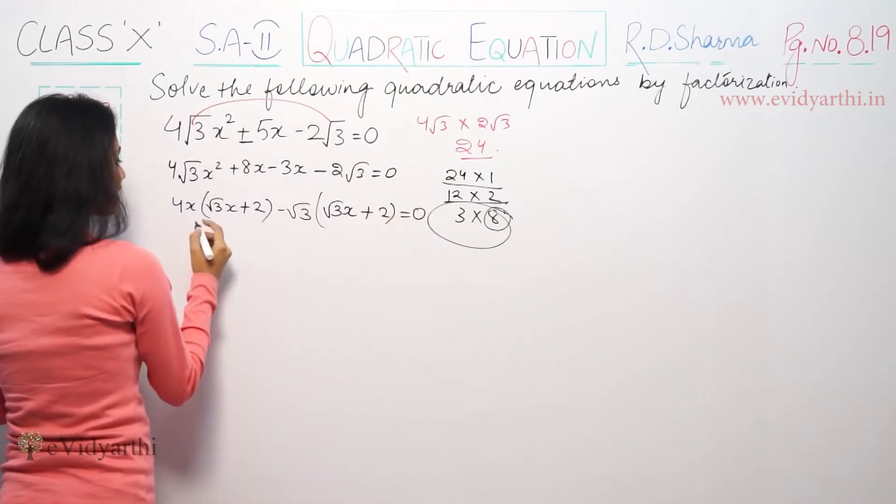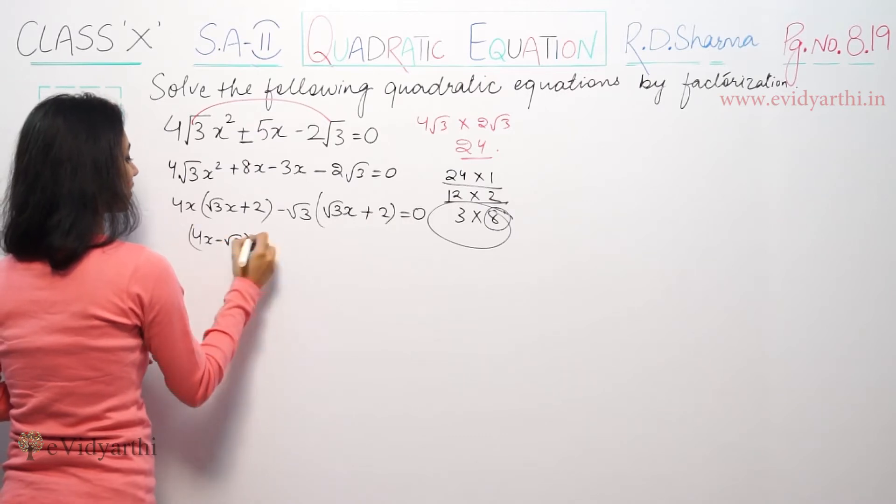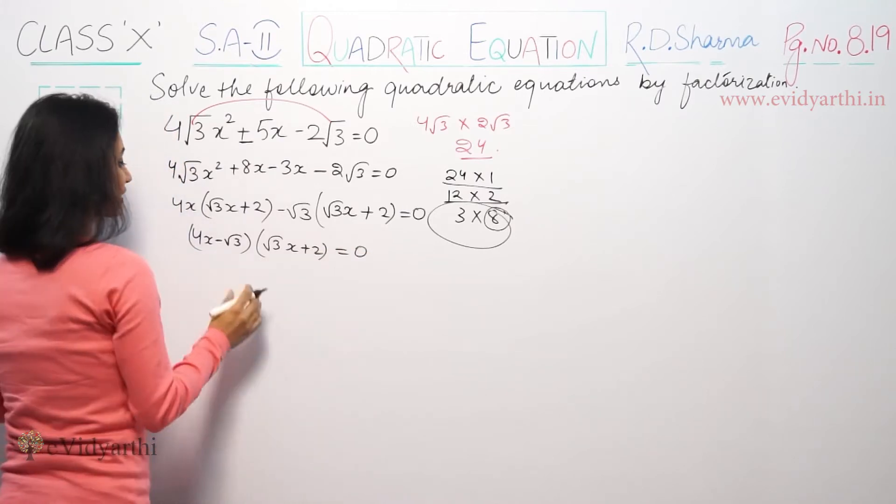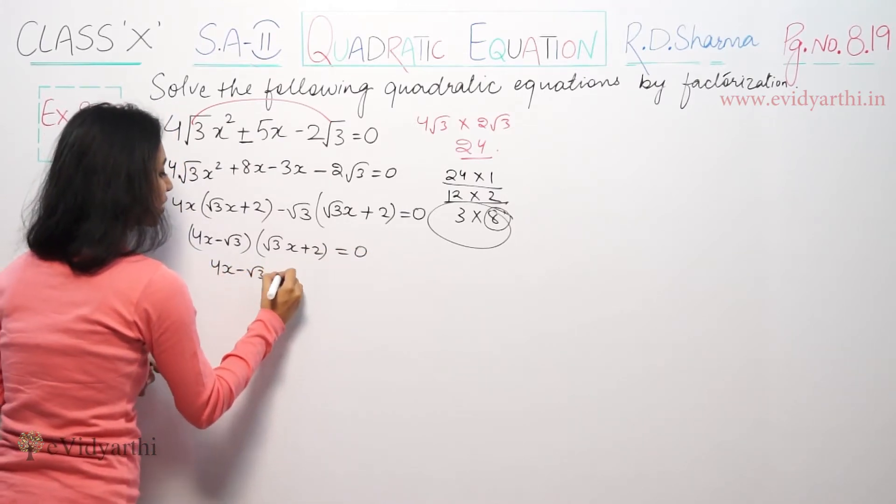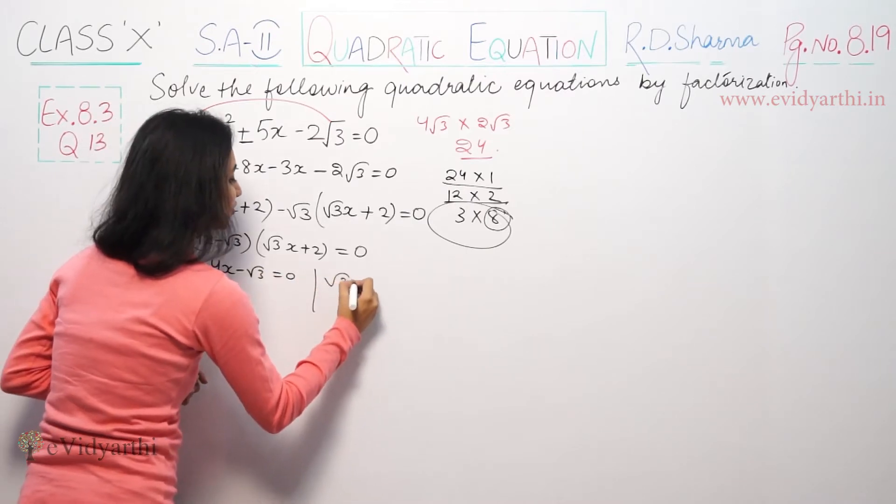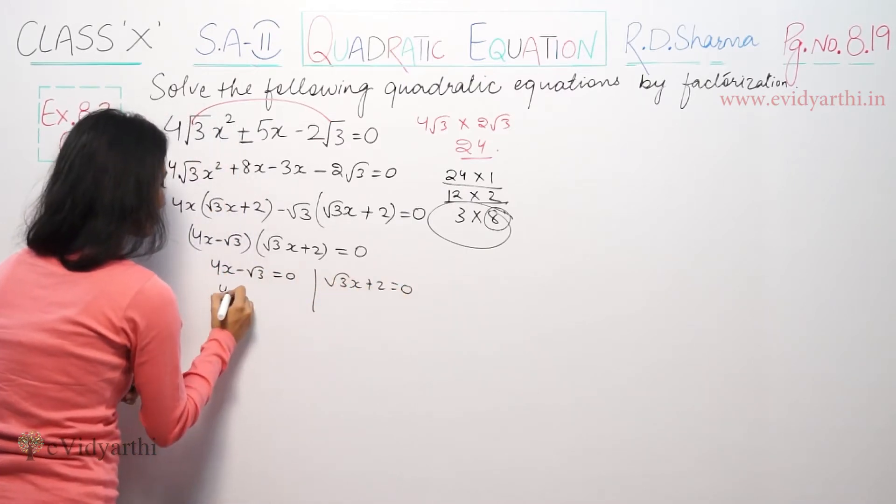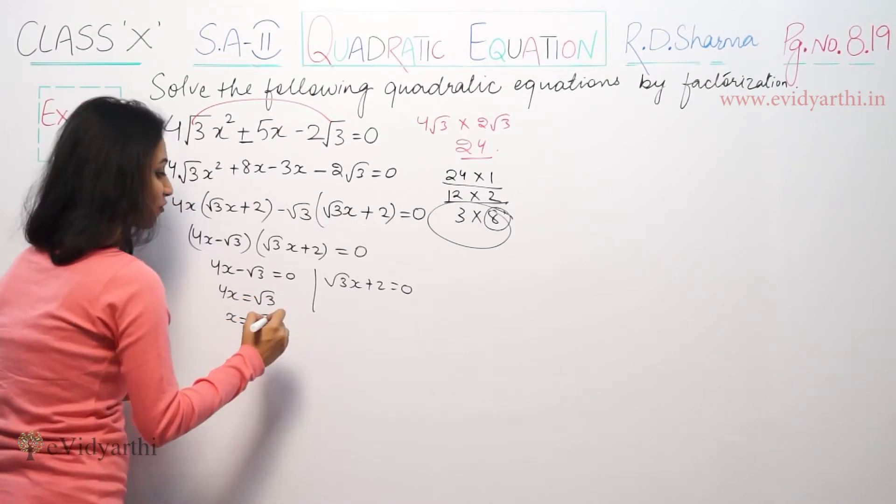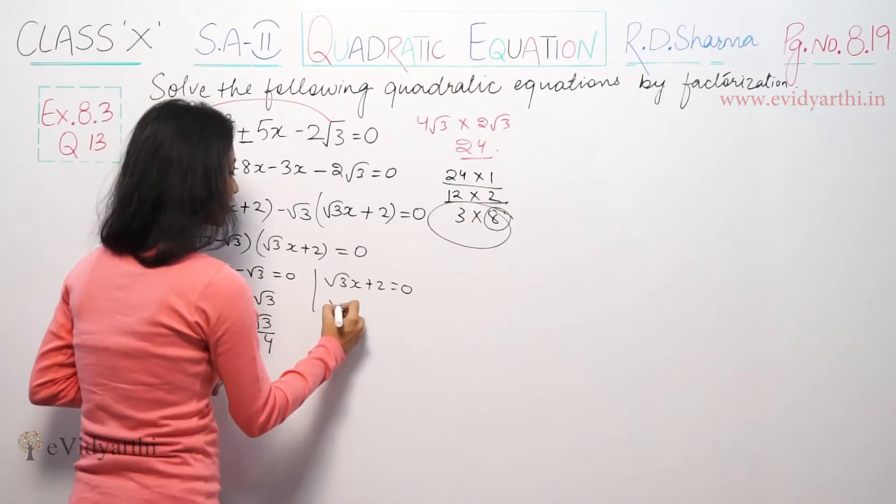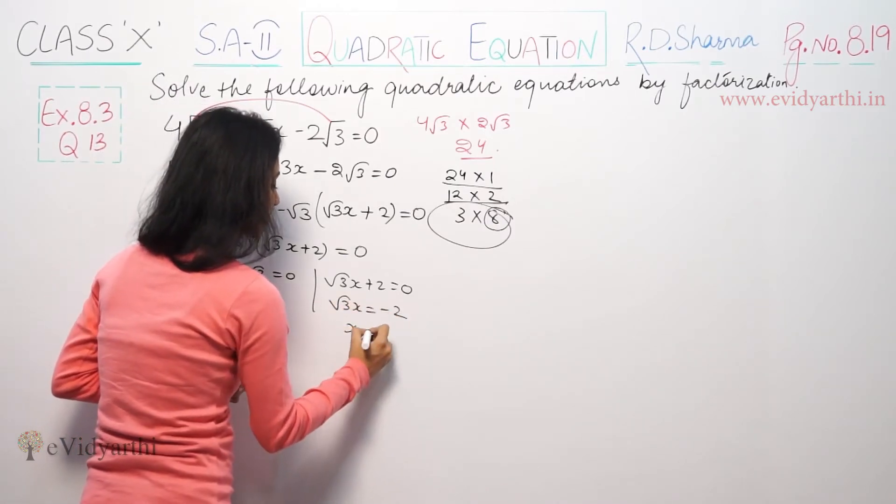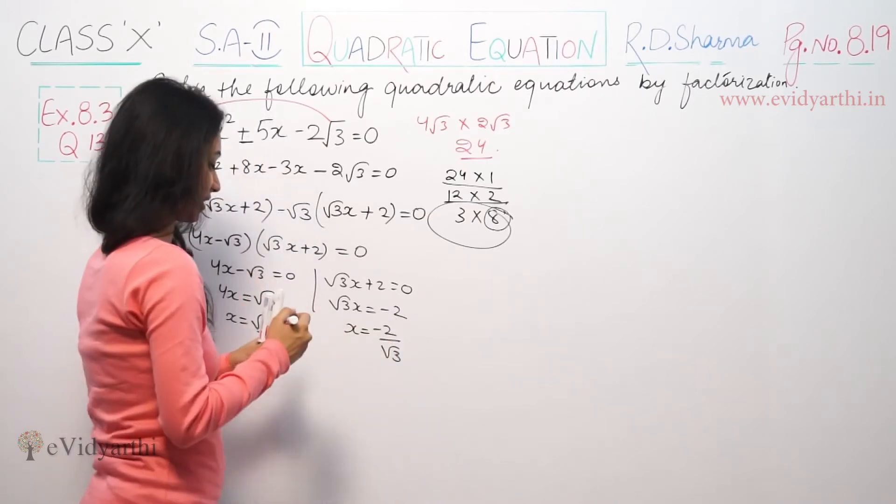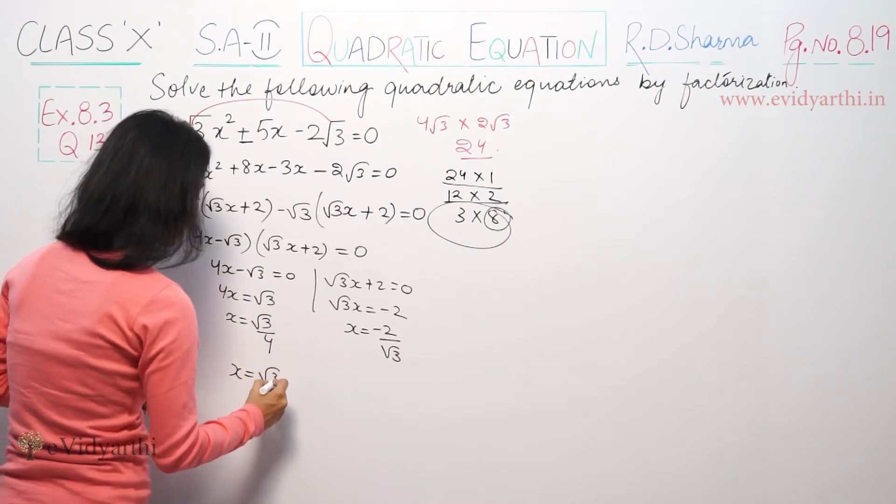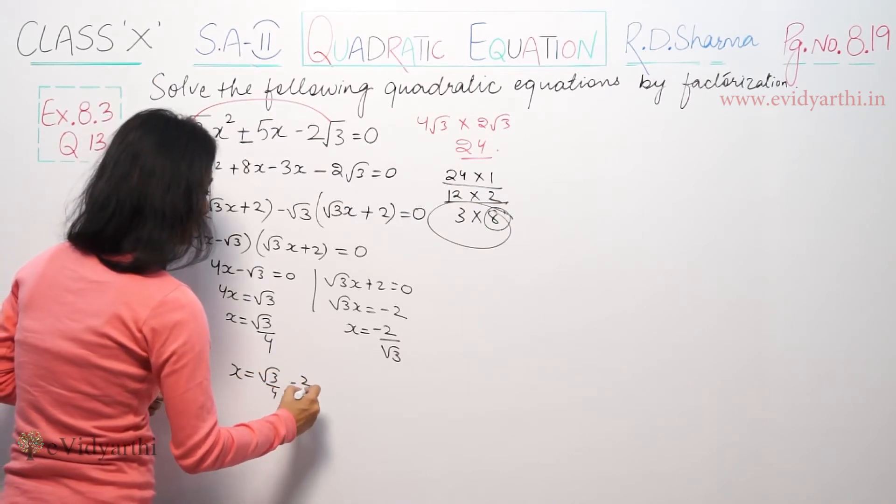We have brackets same, we have 4x minus √3, √3x plus 2 is equal to 0. So 4x minus √3 equals 0 and √3x plus 2 equals 0. So 4x is equal to √3, so x is equal to √3 by 4. Same, √3x is equal to minus 2, so x is equal to minus 2 by √3. So x ka value is √3/4 and minus 2/√3.